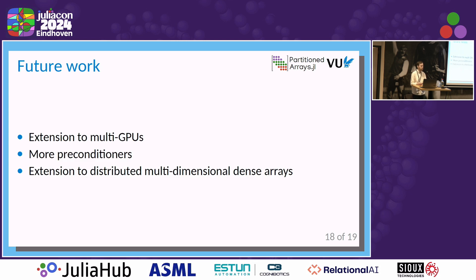As future work, we want to extend this to multi-GPUs, continue working on more preconditioners including domain decomposition preconditioners, and add support for distributed dense arrays — multi-dimensional dense arrays. Currently we have the distributed vector and distributed sparse matrix, but we also want to add multi-dimensional distributed arrays, which will be useful for people working with finite differences, etc. That's all — I'm here to answer your questions. Thank you.